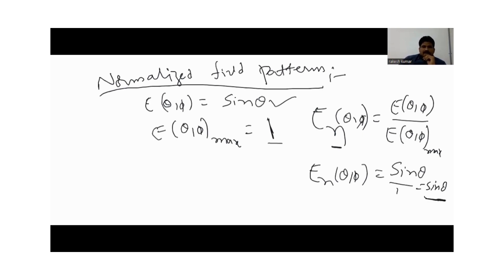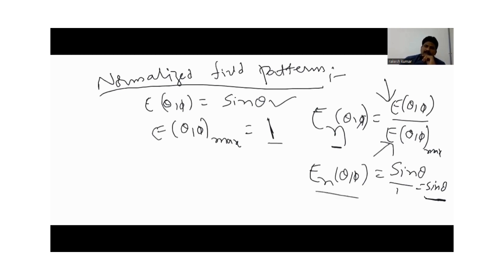To repeat the definition: the normalized field pattern is obtained by dividing the field component by its maximum value. This is the formula in terms of the electric field when the field pattern is expressed electrically.